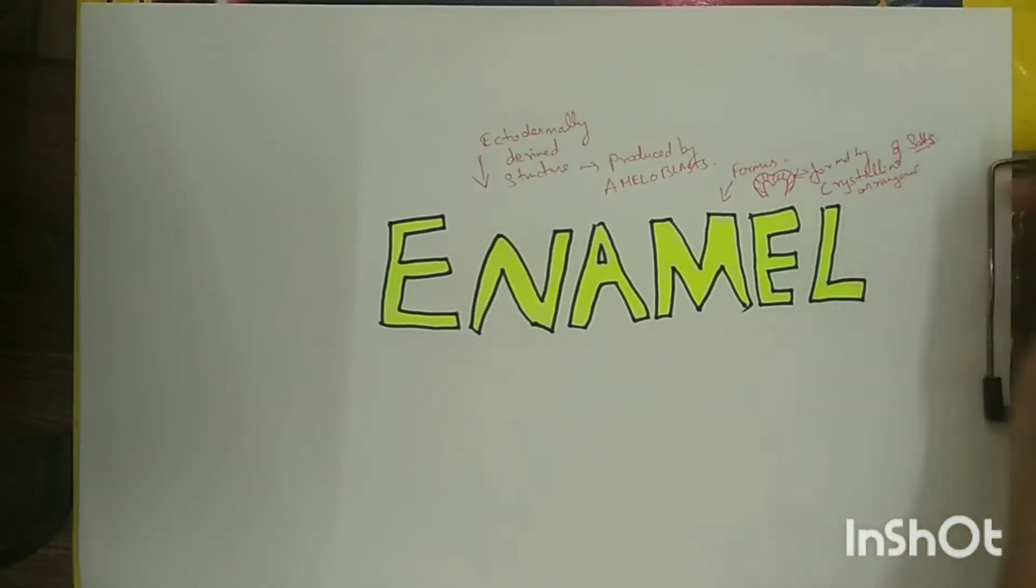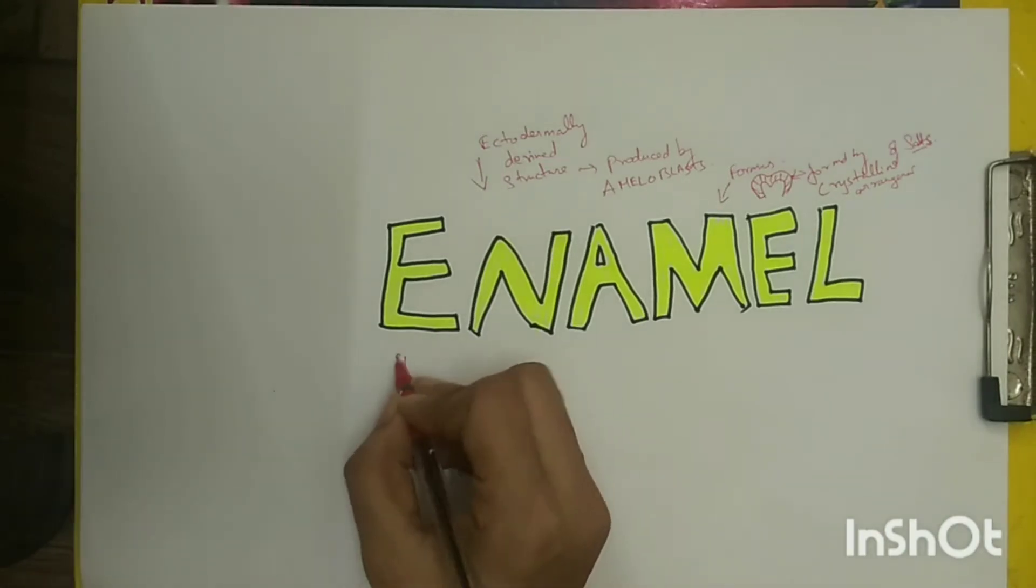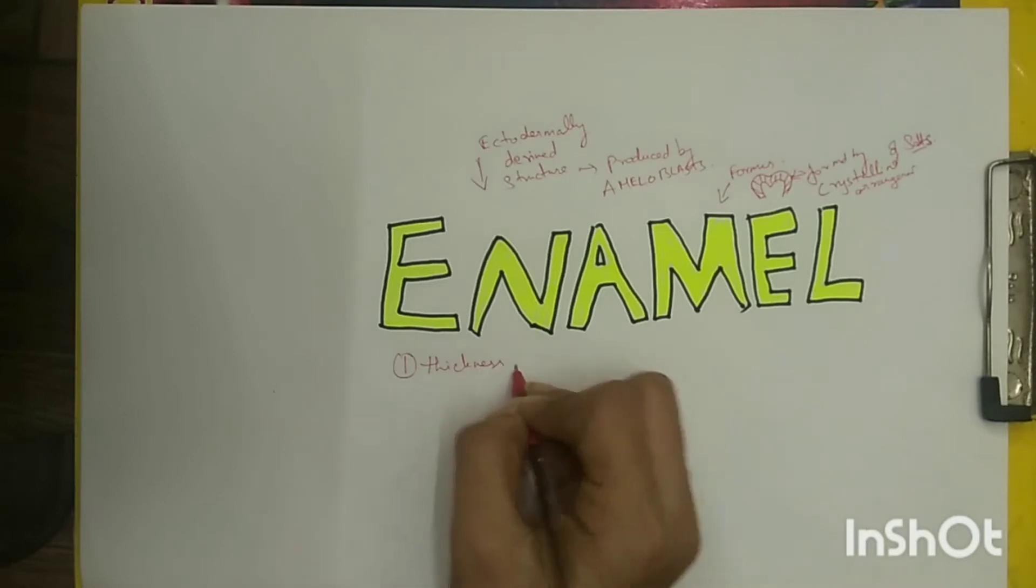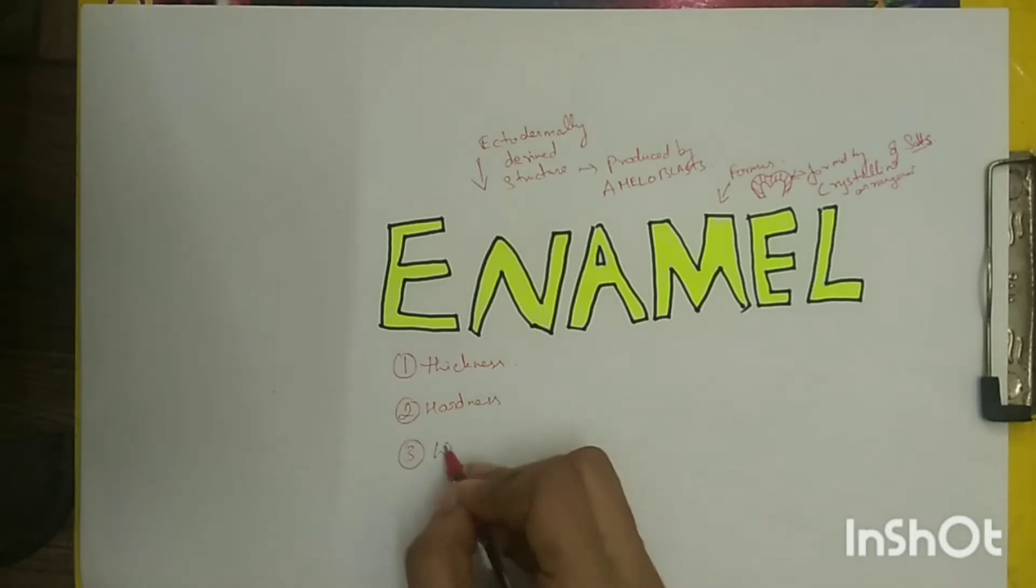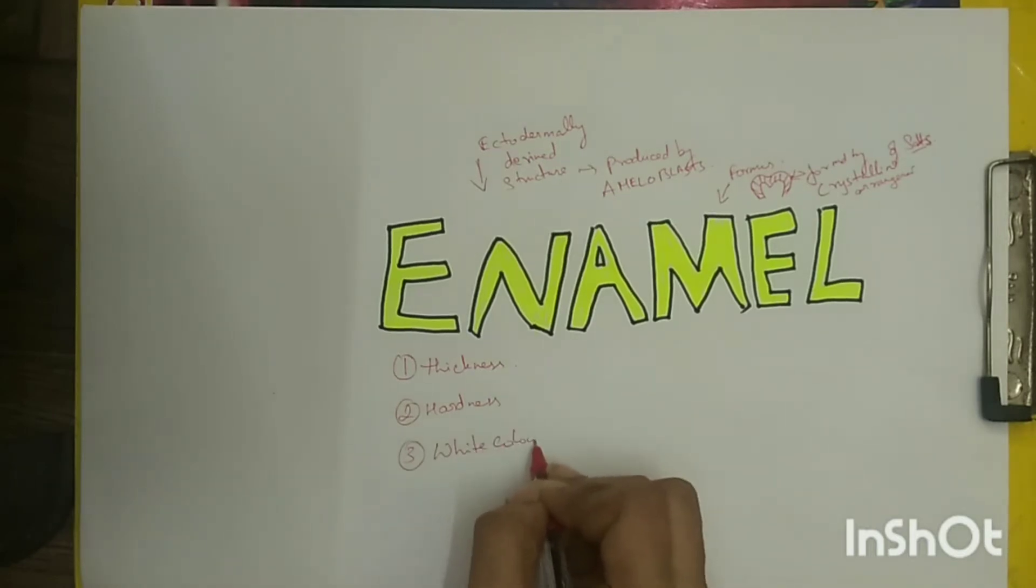Basically what we know about enamel: enamel is thick, enamel is hard, and the color of the enamel. All these things are so common that anyone will know, but let us see all of these in detail as physical properties.